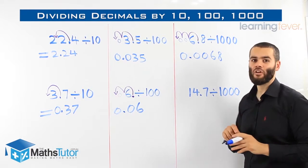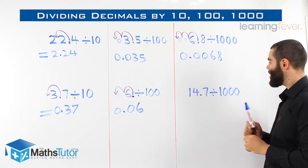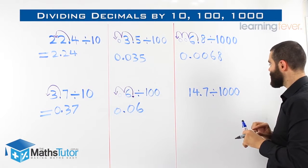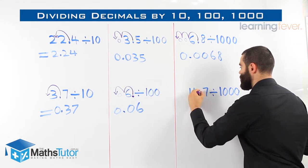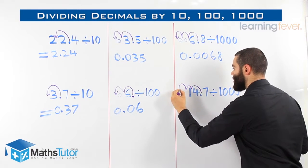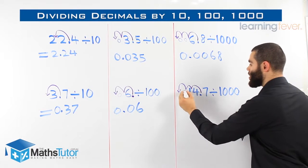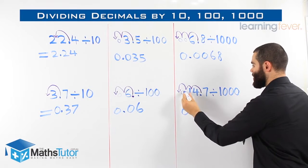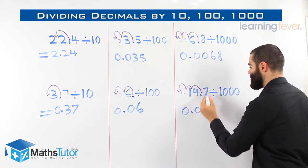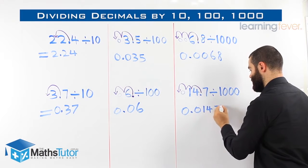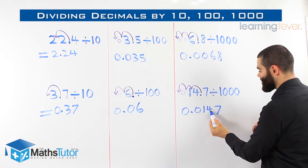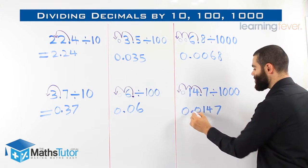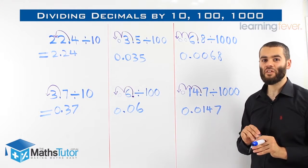Last one, 14.7 divided by a thousand. Let's do it, we're jumping three times to the left. Once, twice, and another jump makes it three. We know there is nothing there, so we put a zero. 0.0147. So the point was between the four and the seven, and we moved it three times. Once, twice, three times, 0.0147.